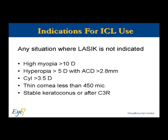The indications include high myopia more than 10 diopters, hyperopia more than 5 diopters with AC depth of more than 2.8 mm, and cylinder greater than 3.5 diopters. Thin corneas less than 450 microns and stable keratoconus patients after collagen cross-linkage may also be considered for ICL implantation.